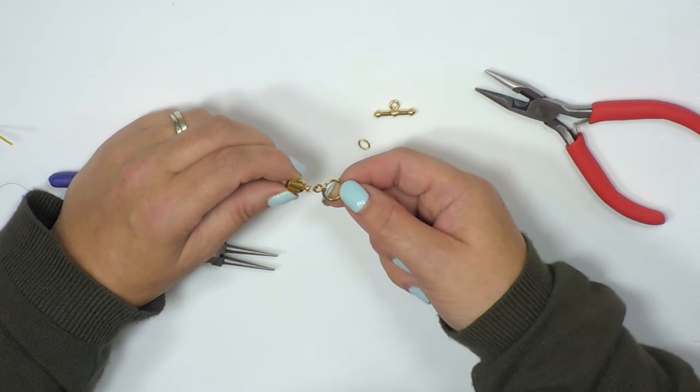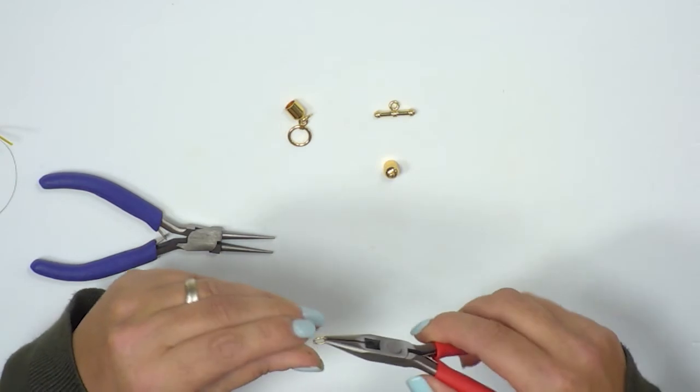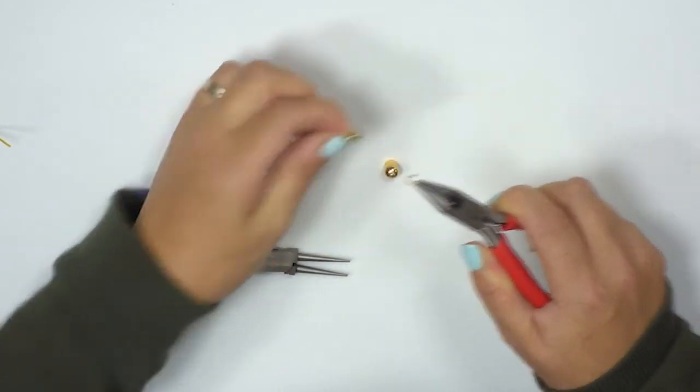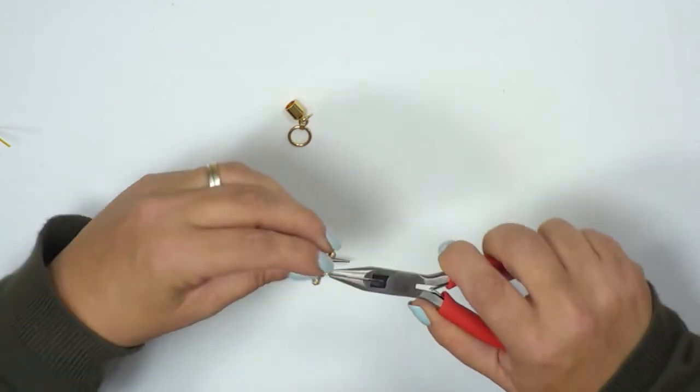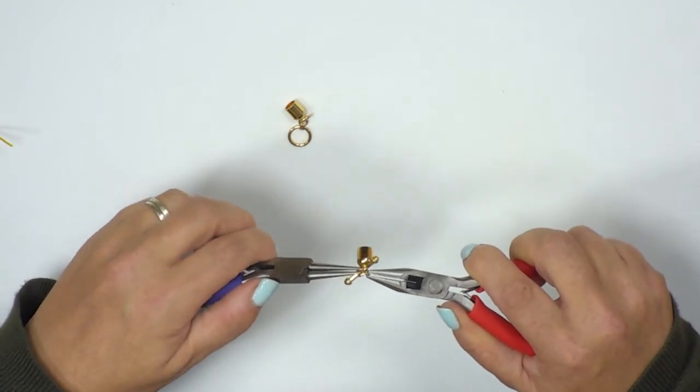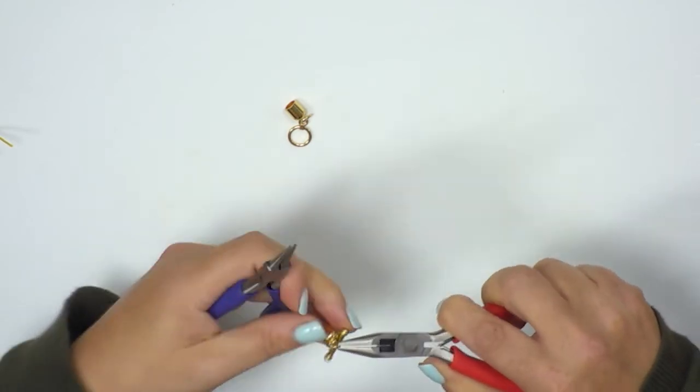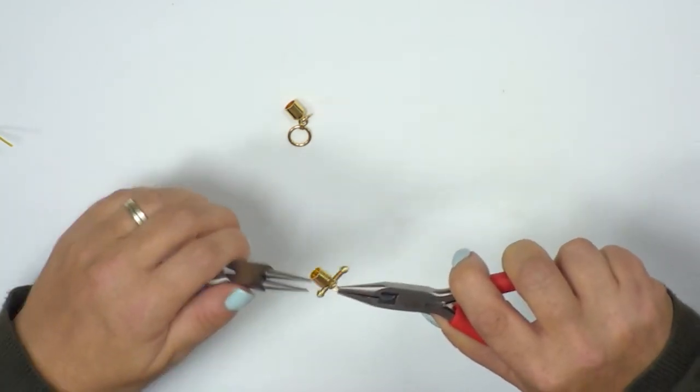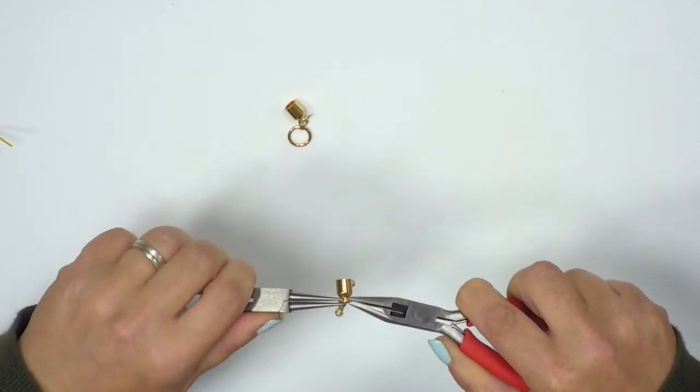You're going to do this on the other part of your toggle clasp so I'll just show you how again how simple this is so just opening up the jump ring popping on your toggle clasp pop on your end cap, start to close that up a little bit using your pliers then on the other side of the jump ring give that a little close. And with the jump rings because you can open them a little bit more if you need to, feel free to just keep opening and closing that jump ring till you get that in place.